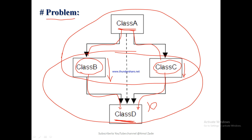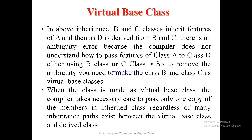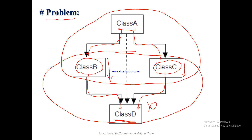What does the virtual base class do? Class D acquires properties from both B and C, getting two copies — one from B and one from C — causing the ambiguity error. To solve this, we make the two intermediate base classes virtual. That means we declare class B and class C as virtual. Indirectly, we are making class A virtual, so the compiler knows two copies of class A exist and can execute either one without confusion.